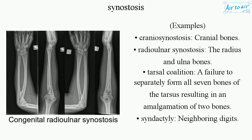Examples of synostosis include: craniosynostosis, involving the cranial bones; radioulnar synostosis, involving the radius and ulna bones; tarsal coalition, a failure to separately form all seven bones of the tarsus resulting in an amalgamation of two bones; and syndactyly, involving neighboring digits.